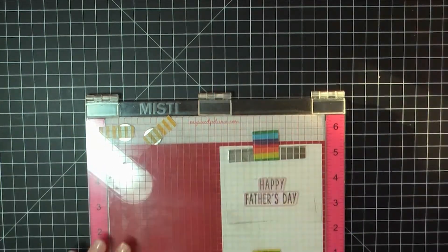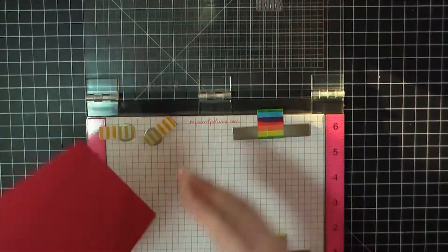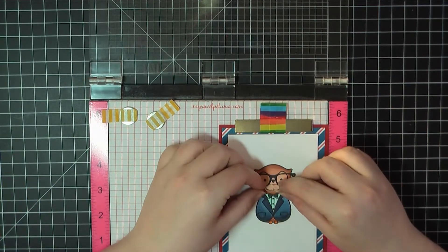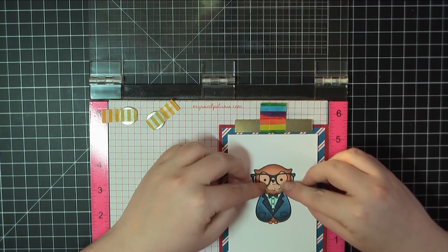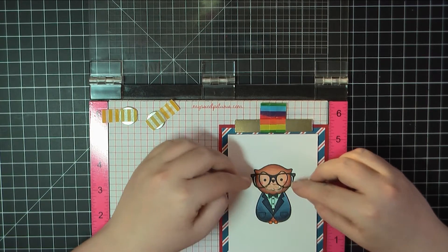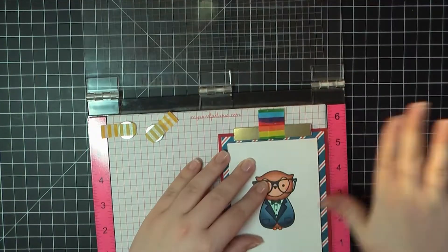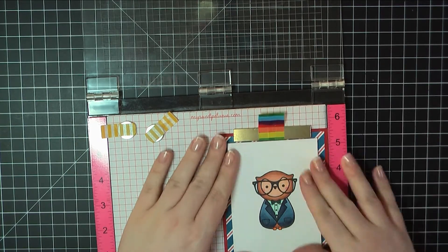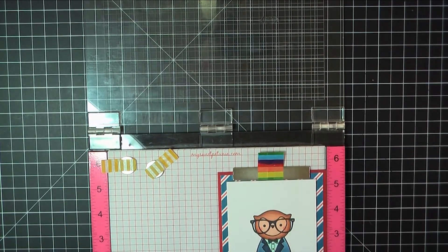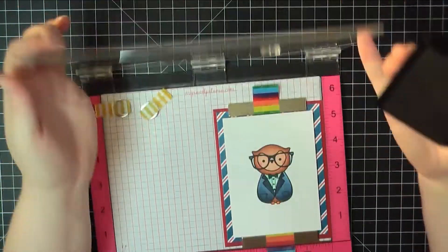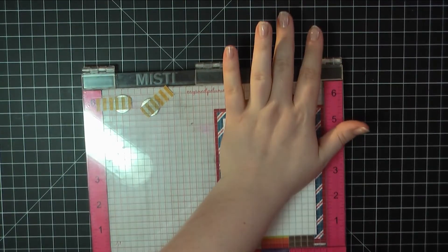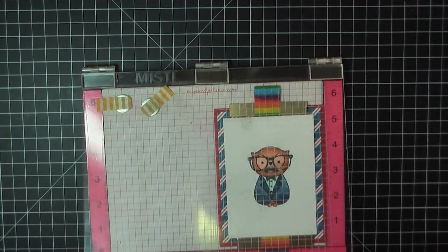And I'm using Simon Says Stamp Intense Black Ink to stamp that. And then, my dad has a mustache. And this stamp set came with a bunch of fun little extras, umbrellas and hats and different mustaches. So I thought I would go ahead and add this. If I had been thinking, I would have stamped it before I finished the card, but I forgot.